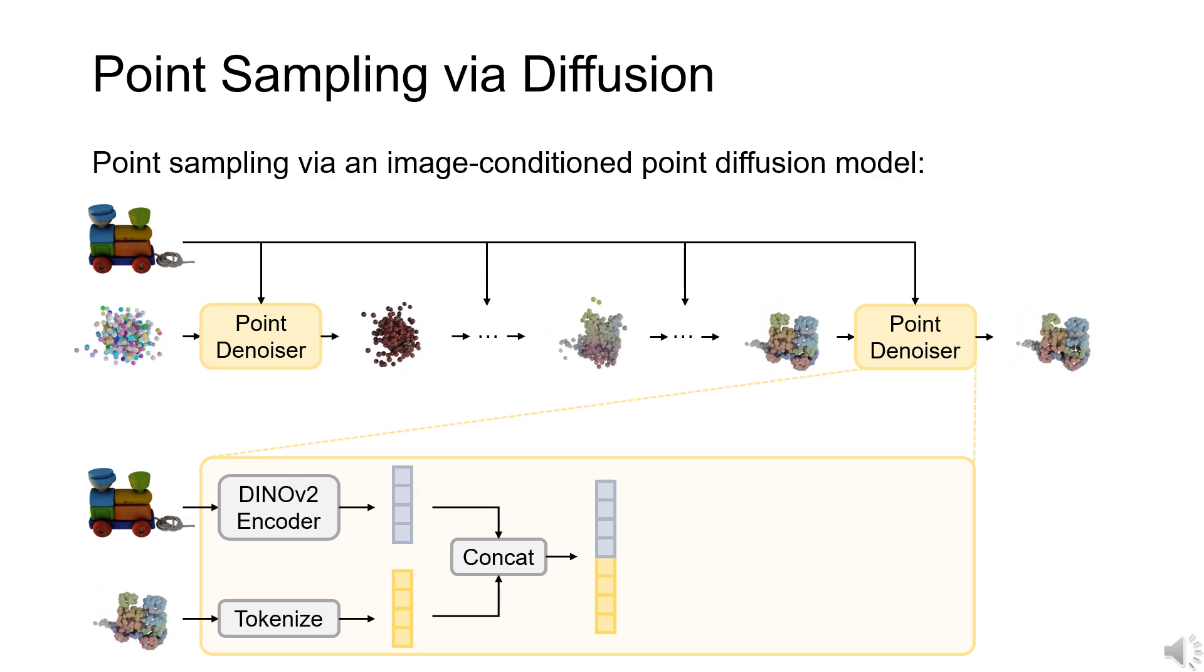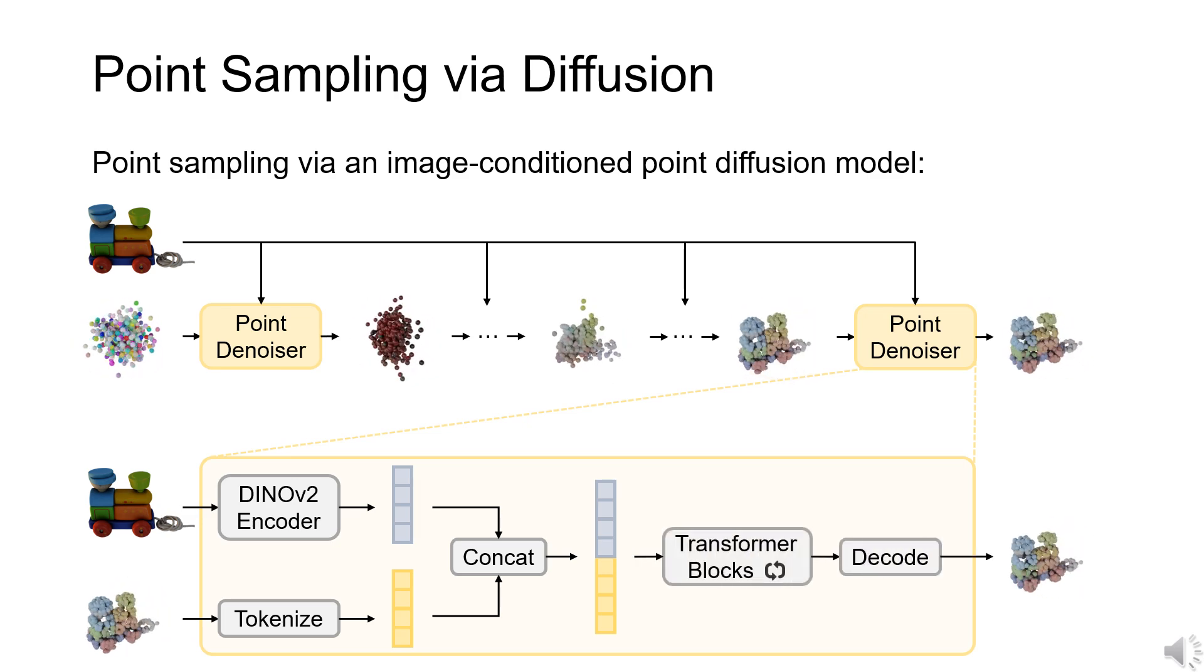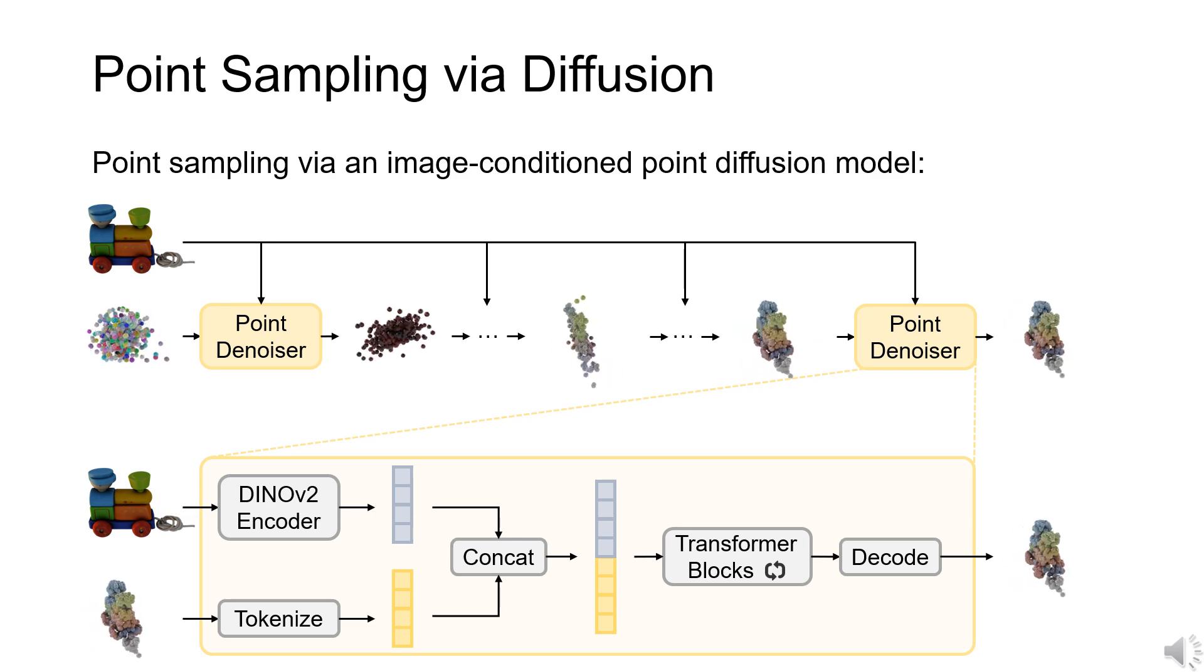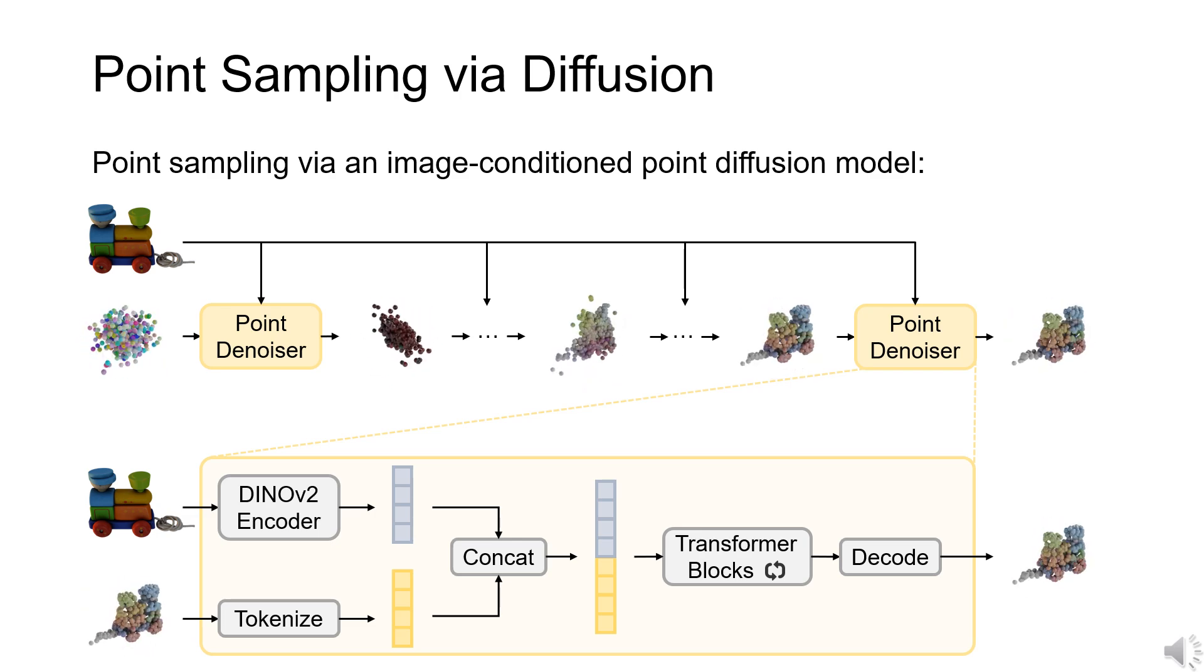The concatenated latent vectors are processed by a set of transformer blocks and decoded as the denoised point cloud. We use 32 steps during inference, with DDIM as our sampler.